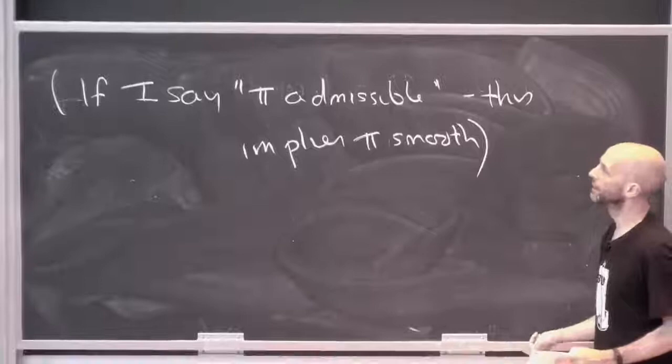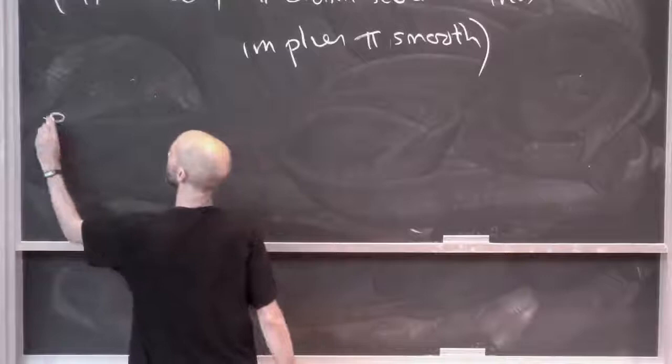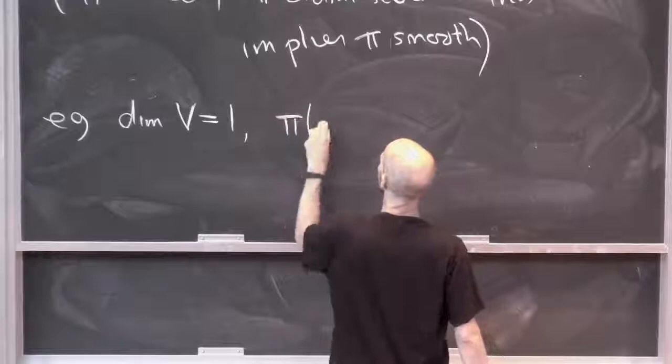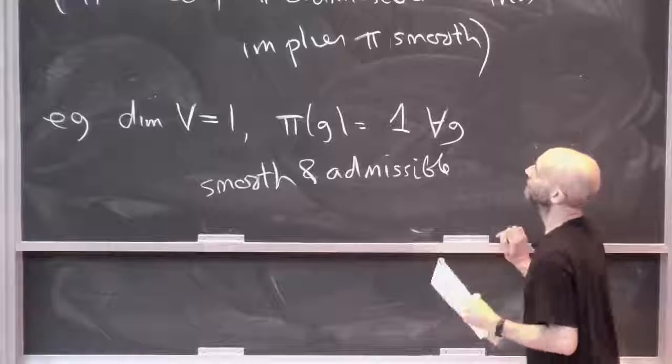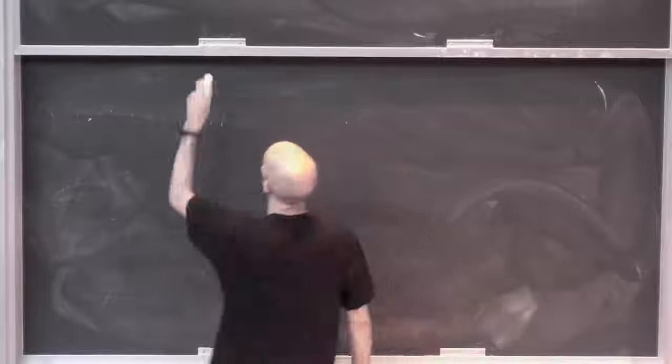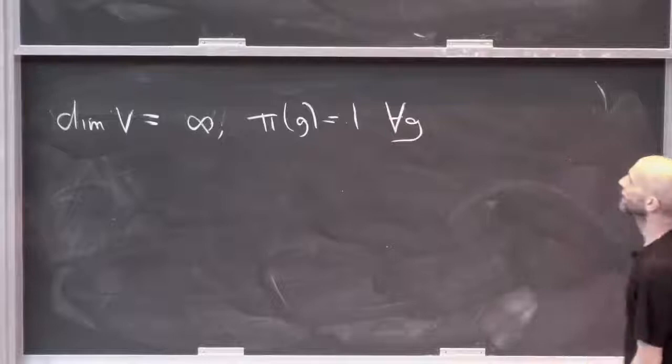So just let me give you somehow one example that clarified my thoughts. If for example, if dim V is 1 and then pi of G is just 1 for all G. That's easily checked to be smooth and admissible. But let me just make the following note. If I take an infinite direct sum of these, if dim V is infinity and pi of G is 1 for all G, then this is smooth but not admissible.